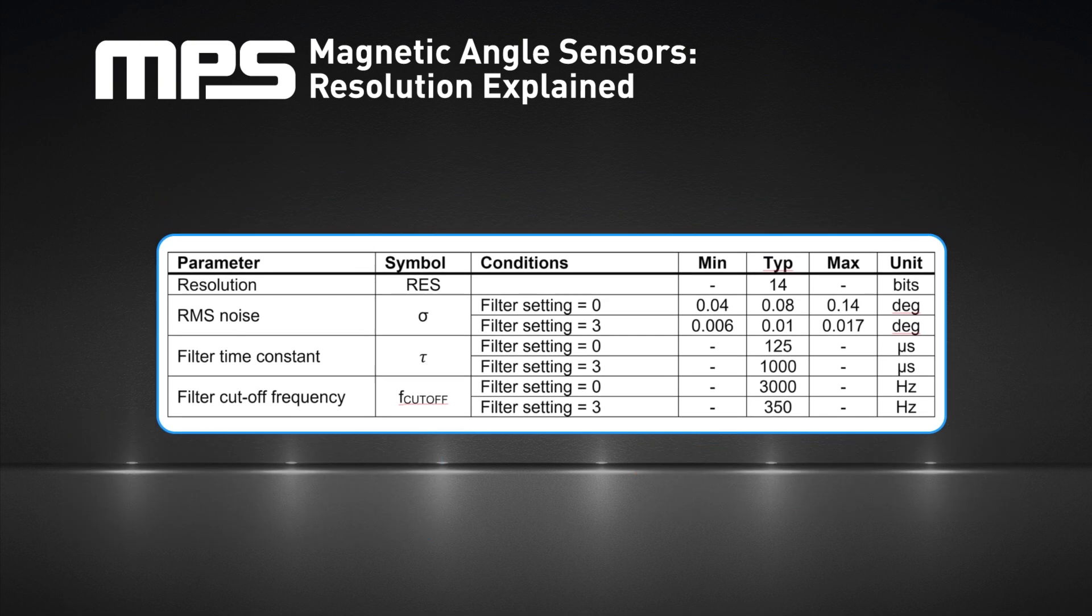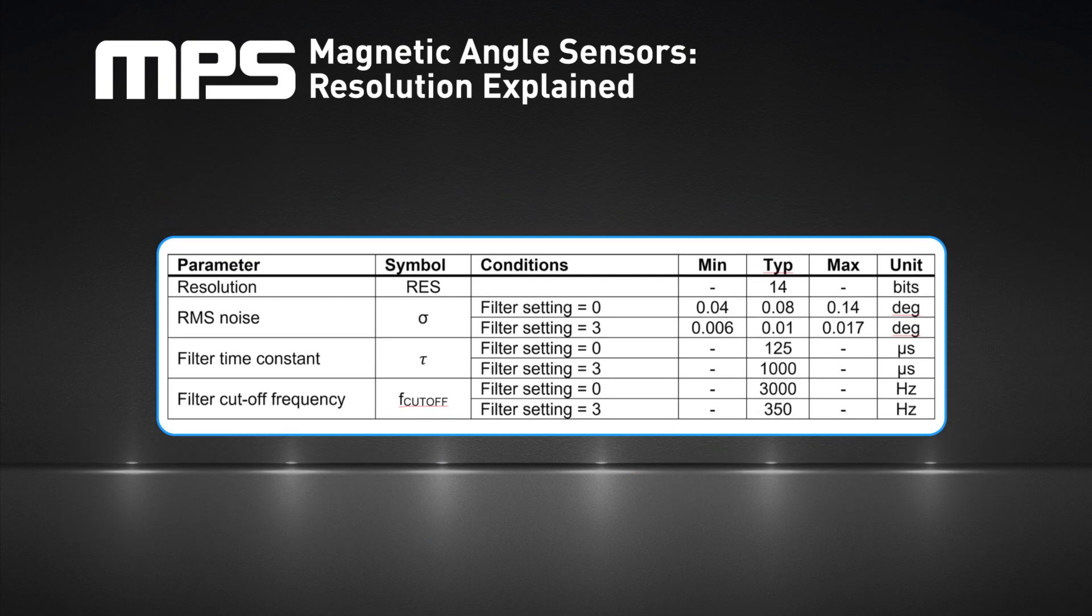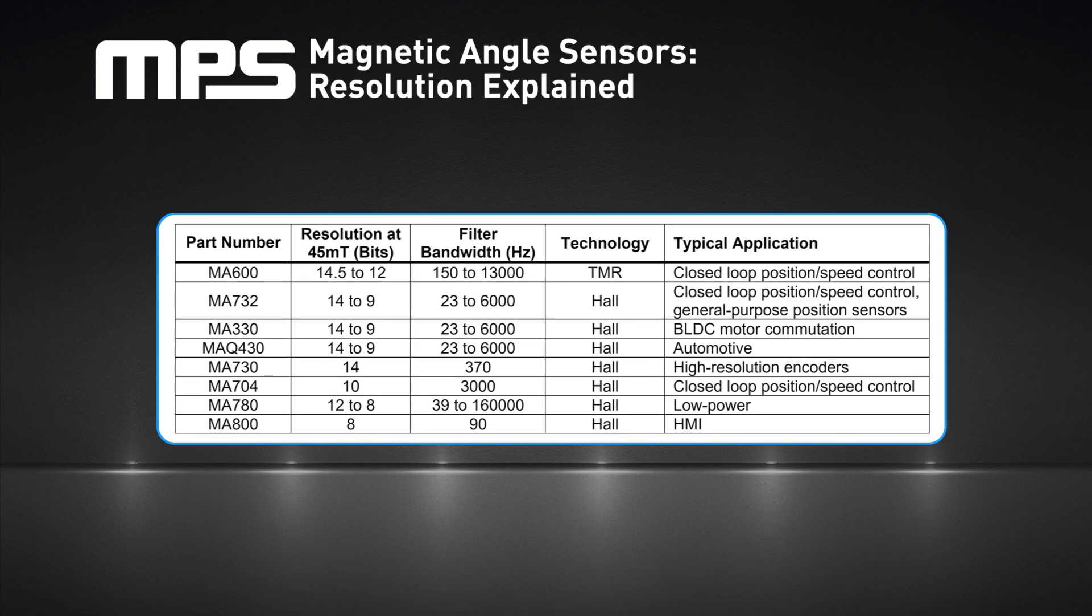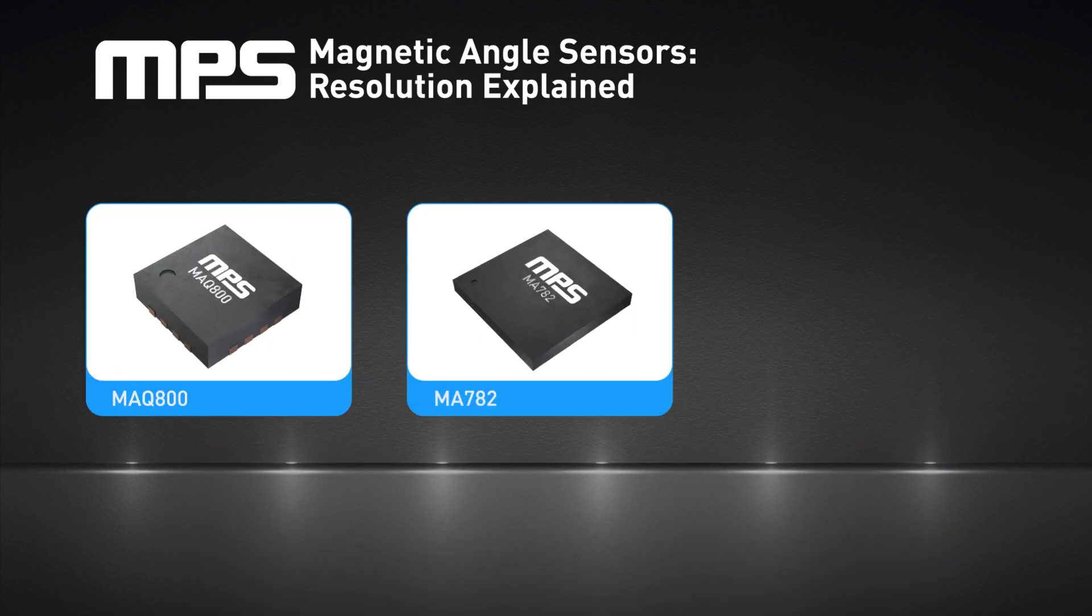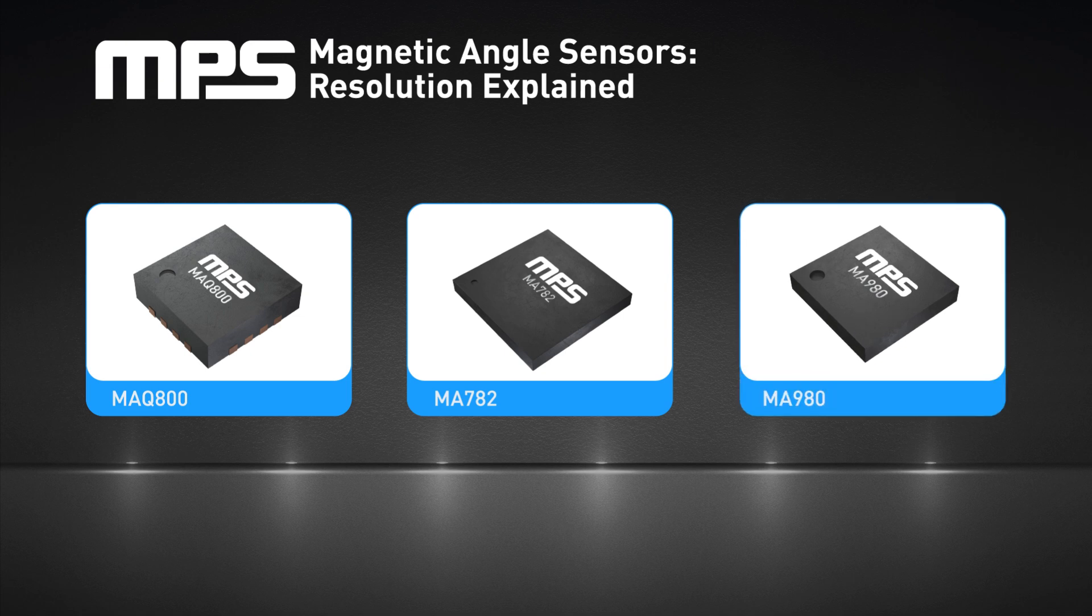For many MPS angle sensors, the digital representation of the data is 16 bits. Meanwhile, the resolution, sensing technique, and the filter bandwidth vary between parts. This table lists the resolution and bandwidth values for some sensors in the MAG-alpha family. Note that some sensors have a configurable filter bandwidth, which allows them to be adapted to different application requirements. The table also illustrates how the TMR sensing technique used inside the MA600 sensor helps achieve excellent resolution at higher bandwidths compared to Hall-based sensors.